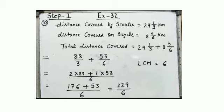Distance covered by scooter: 29.1/3 km. Distance covered on bicycle: 8.5/6 km. Distance covered by scooter and bicycle = 29.1/3 + 8.5/6. When you solve it, the answer is 229/6 km.